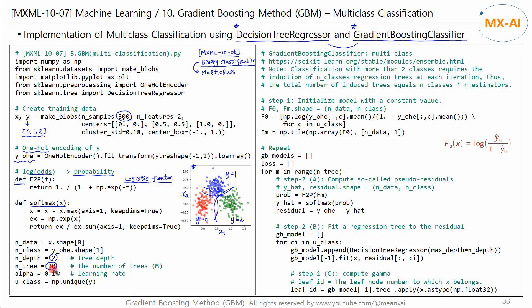The depth of the tree is set to 2, the number of trees is set to 30, and the learning rate is set to 0.1. The U class is 0, 1, and 2.